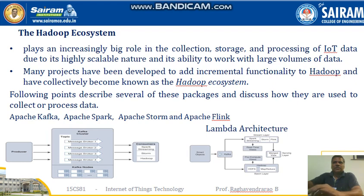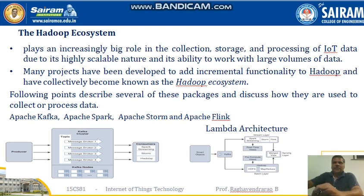Kafka is built to be scalable and fast. It is composed of topics and message brokers, where producers write the data — you can see the producers here — and consumers read data from the topics. The data flows from smart objects, that is producers, through the topics in Kafka to the real-time processing engines.